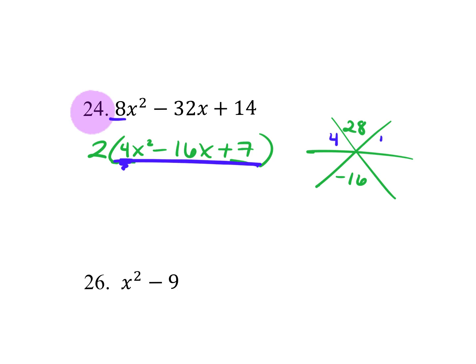So that's going to be 4 and 4. What can you multiply to get 28, a positive, that you can add to get a negative? They're both going to be negative, right? Do you know what it is? Negative 14 and negative 2.